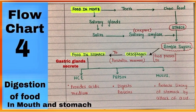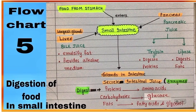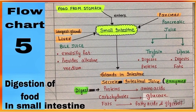Flowchart number four is showing digestion of food in the mouth and stomach. Flowchart number five is showing digestion of food in the small intestine.